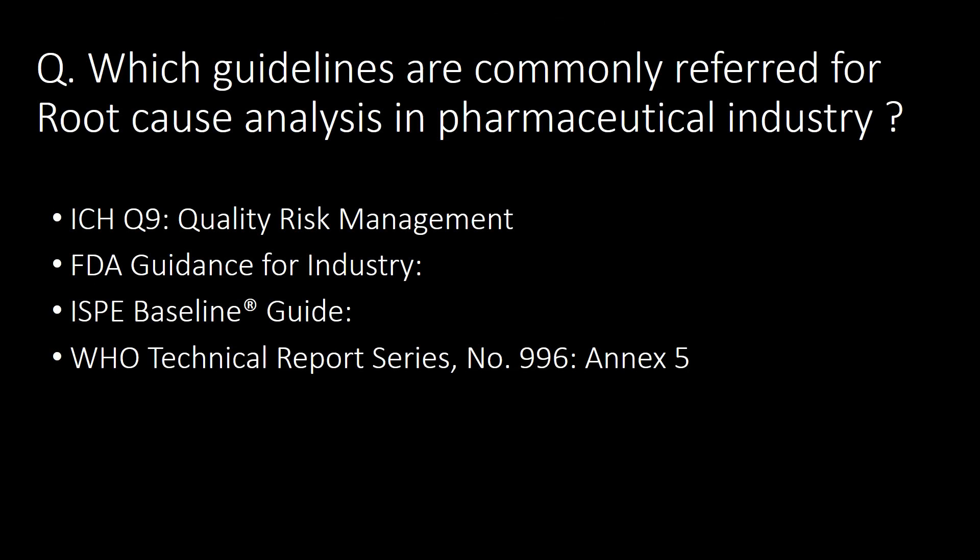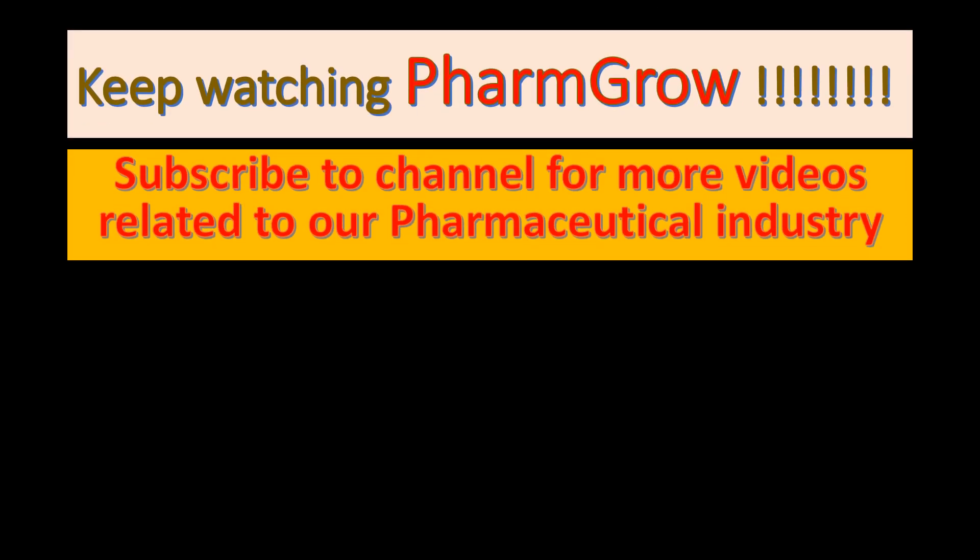Which guidelines are commonly referred to for root cause analysis in the pharmaceutical industry? Four commonly referred guidelines are: first, ICH Q9; second, FDA Guidance for Industry; third, ISPE Baseline Guide; and fourth, WHO Technical Report Series Number 996, Annex 5.